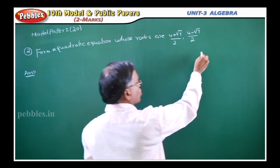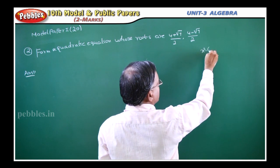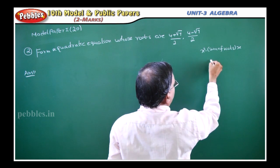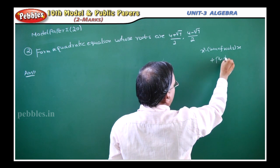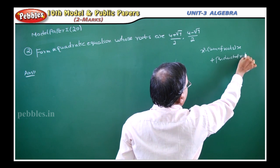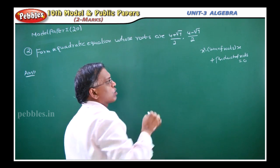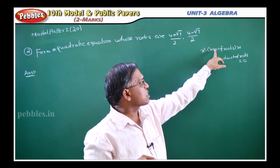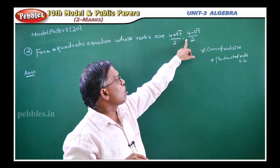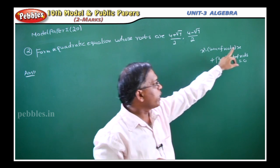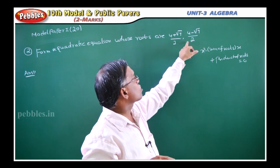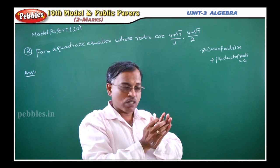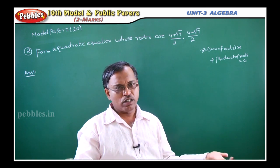The formula is: x² minus (sum of roots)·x plus (product of roots) = 0. This is a formula you should remember. Sum means the addition of the two roots into x, plus the product of roots, which means you multiply the two roots together. Substitute the sum and product into this formula and you will get the answer very easily.